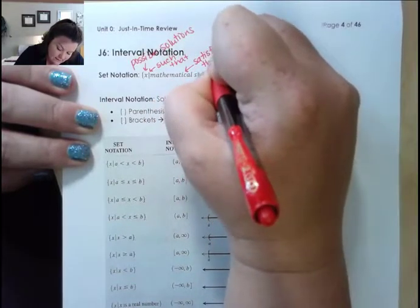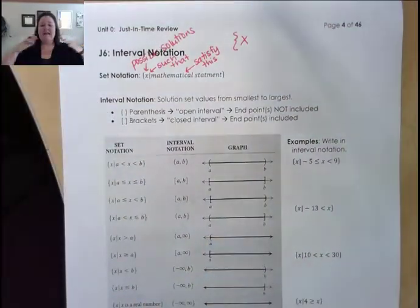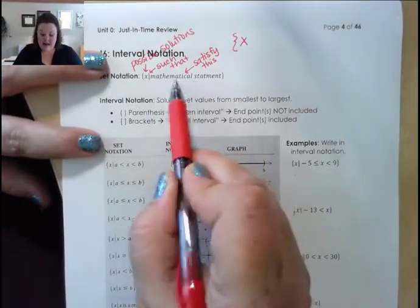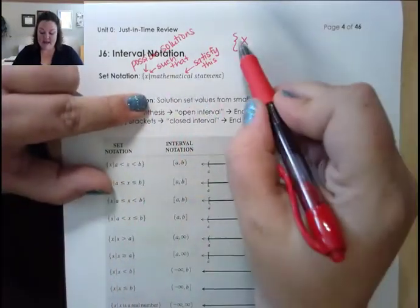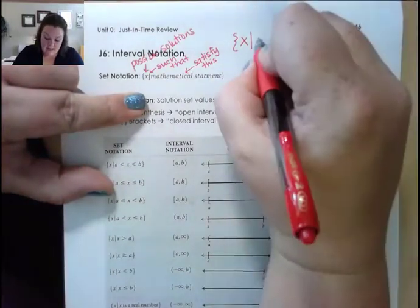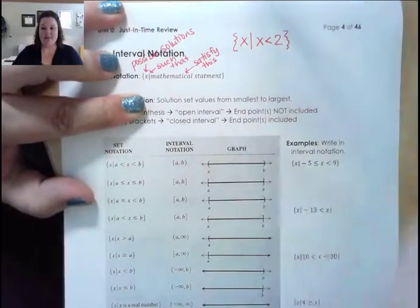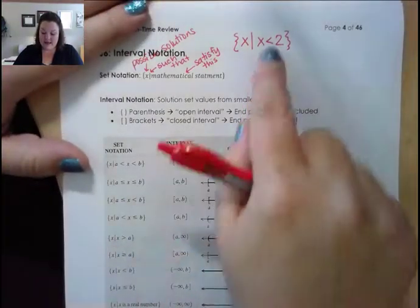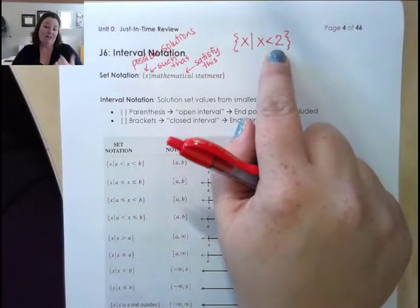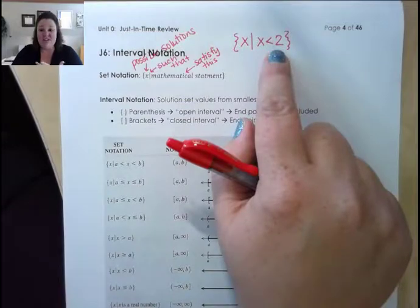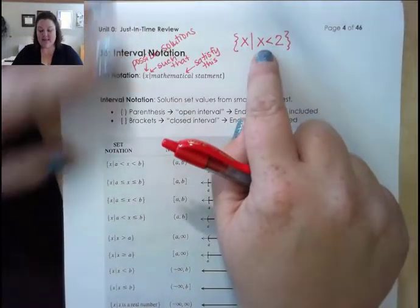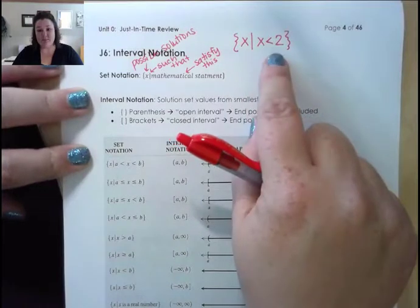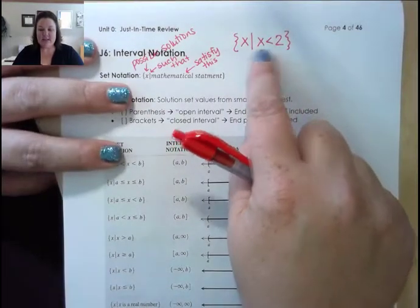So x — any x could be a possibility as long as it satisfies whatever the mathematical statement is made after this line. For example, if I have the set of all x's such that x is less than 2, what this is saying is x is any solution in the universe as long as it's smaller than 2. That could be 1, 1.99999999, negative 10 million, or 0. It's not possible to list every possible solution, so we write it like this.